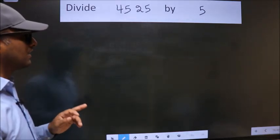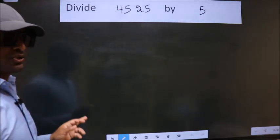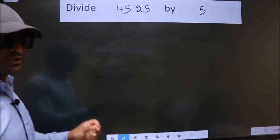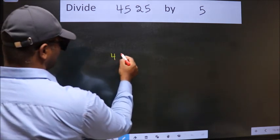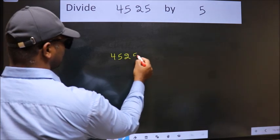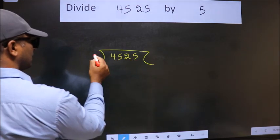Divide 4, 5, 2, 5 by 5. To do this division, we should frame it in this way. 4, 5, 2, 5 here, 5 here.